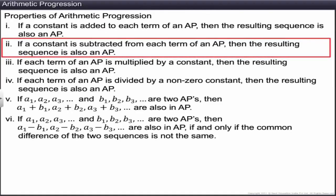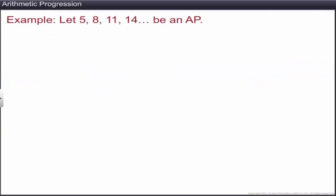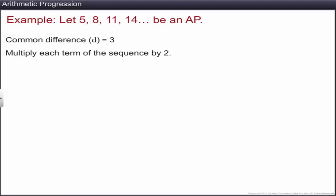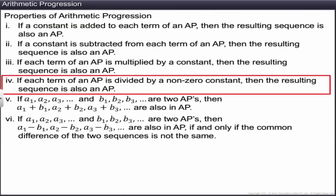If each term of an AP is multiplied by a constant, the resulting sequence is also an AP. For example, the AP 5, 8, 11, 14, … with common difference 3, when each term is multiplied by 2, gives 10, 16, 22, 28, …, an AP with common difference 6. The common difference of the resultant sequence is a multiple of the multiplier. Similarly, if each term is divided by a non-zero constant, the resulting sequence is also an AP.